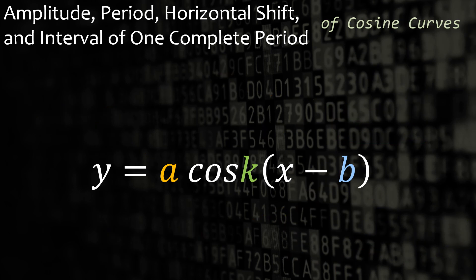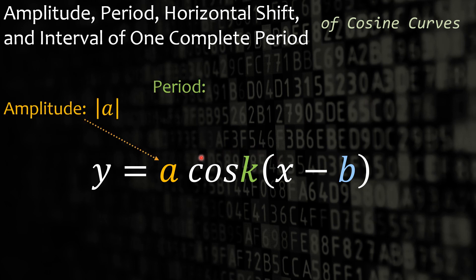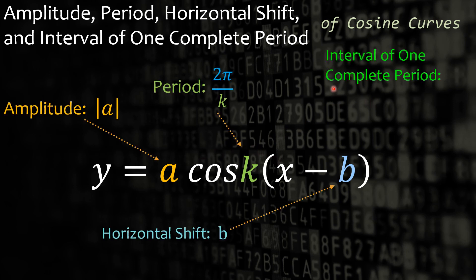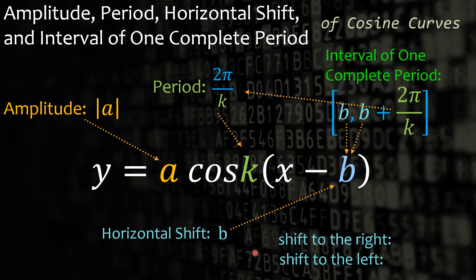That is also true when we talk about the cosine curve. We also have the amplitude with the same absolute value of a, period of 2 pi over k, interval of complete period, and horizontal shift which is b. We shift to the right or shift to the left when b is greater than zero or b is less than zero. When we see minus b, that is positive b; when we have plus b, then we have negative b.